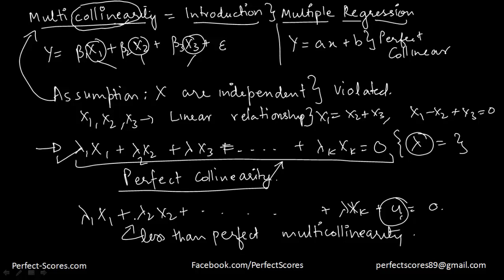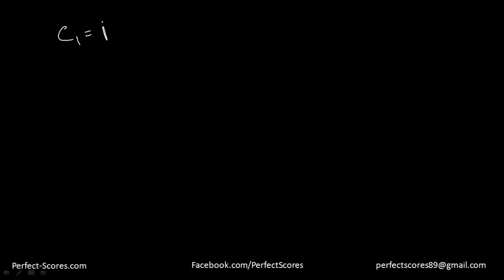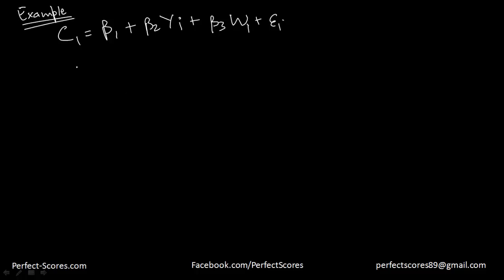Let's take a simple example. We try to estimate a model where we have consumption C equal to beta 1 plus beta 2 times income Y plus beta 3 times wealth W, plus an error term. So in this model, C is the consumption, Y is the income, and W is the wealth. This is our multiple regression model for this example.